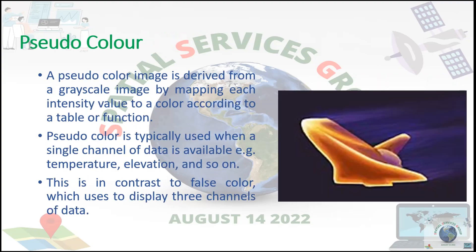Pseudo color: a pseudo color image is derived from a grayscale image by mapping each intensity value to a color according to a table or function. Pseudo color is typically used when a single channel of data is available, e.g. temperature, elevation, and so on. This is in contrast to false color, which uses three channels of data to display.